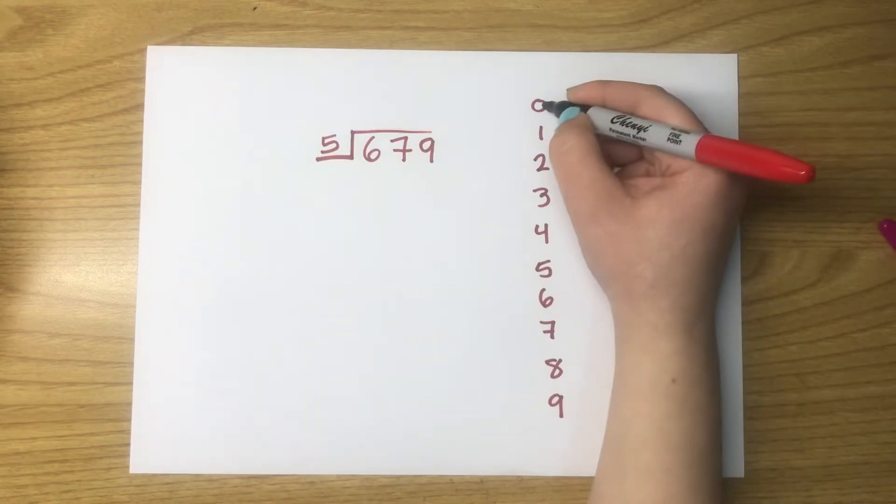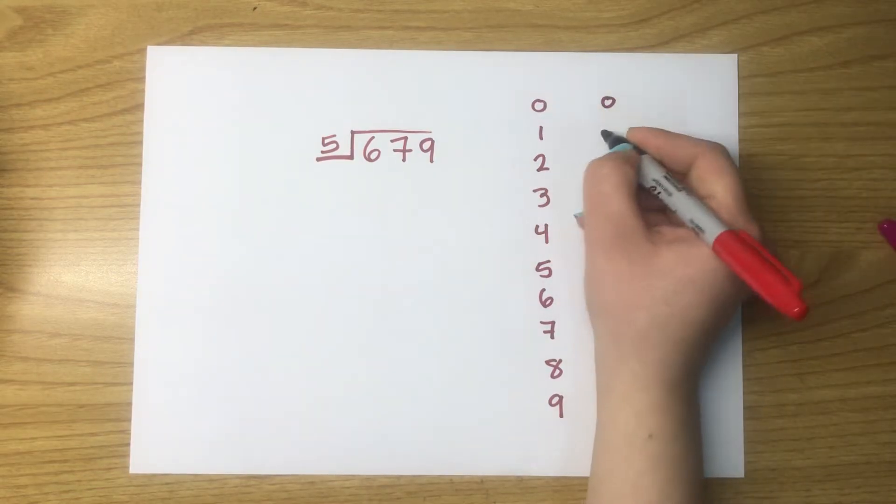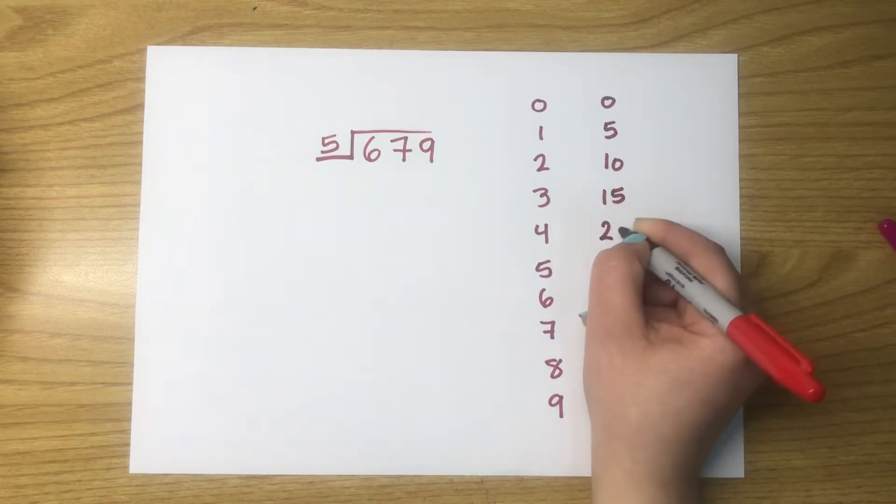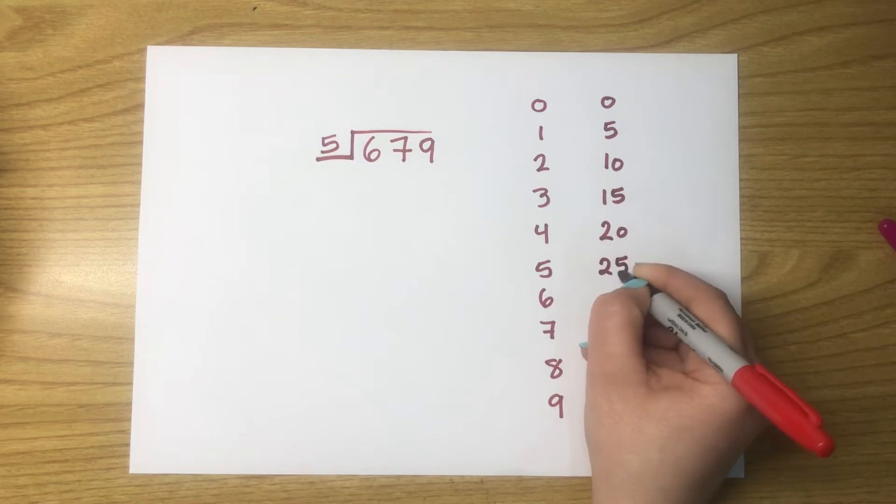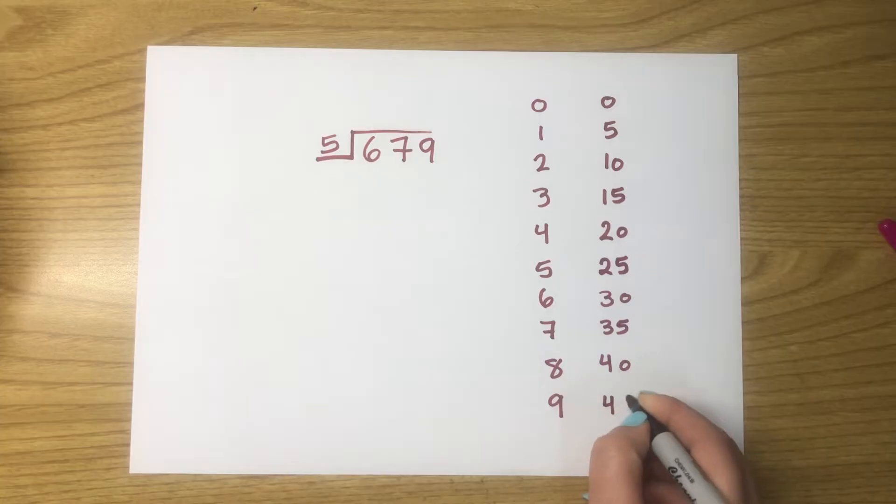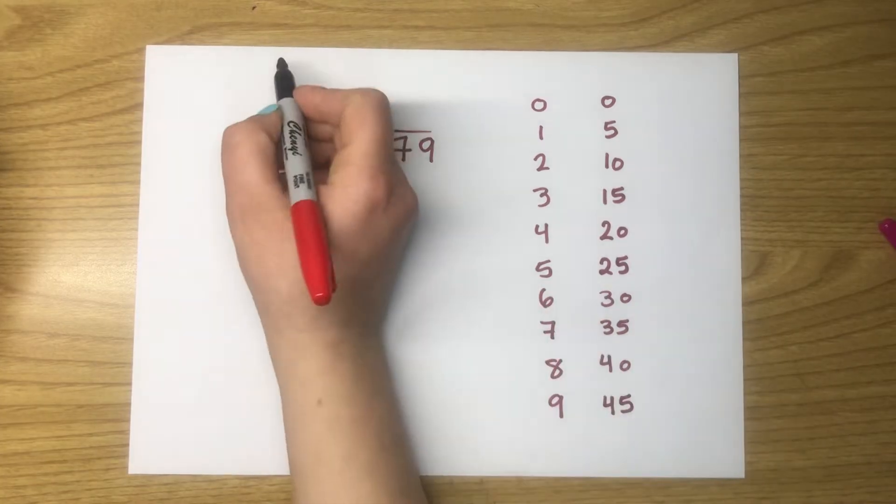The multiples of 0: 0 times 5 is 0, 1 times 5 is 5, 10, 15, 20, 25, 30, 35, 40, and then the last thing is 45. Remember the steps.